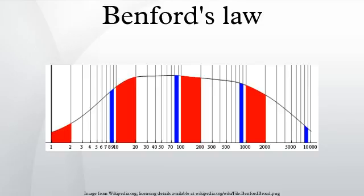Generalization to digits beyond the first: it is possible to extend the law to digits beyond the first. In particular, the probability of encountering a number starting with the string of digits n is given by a specific formula. For example, the probability that a number starts with the digits 3, 1, 4 is log10(1 + 1/314) ≈ 0.0014. This result can be used to find the probability that a particular digit occurs at a given position within a number.